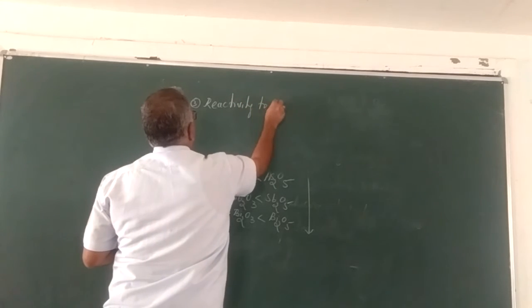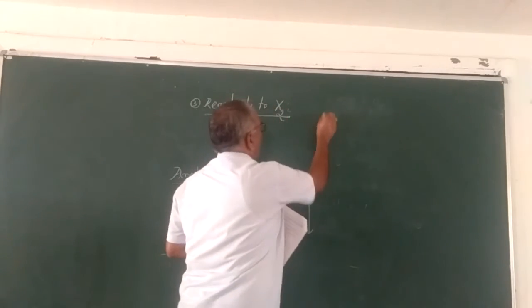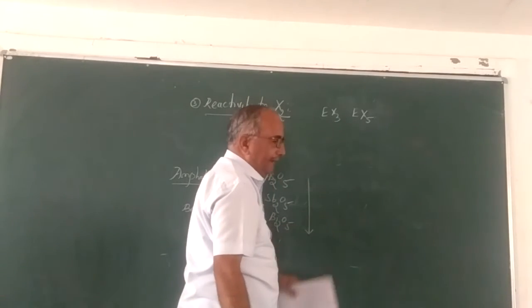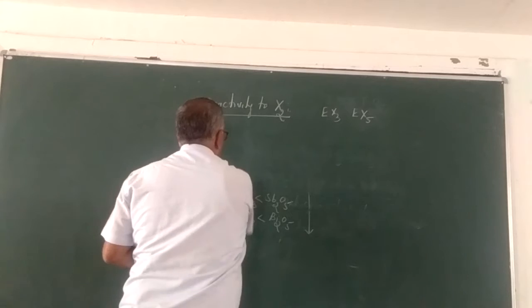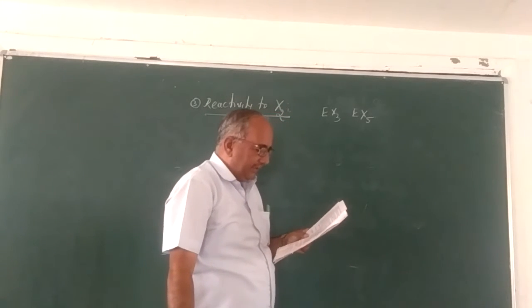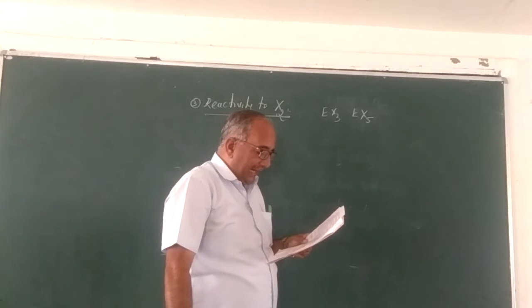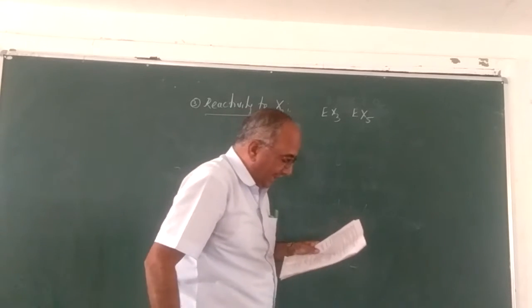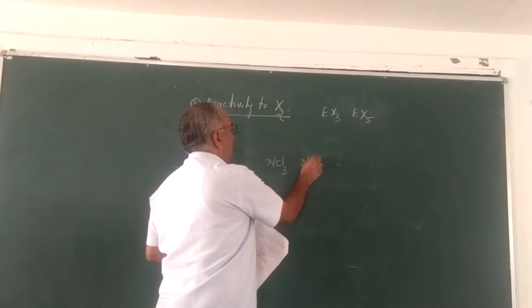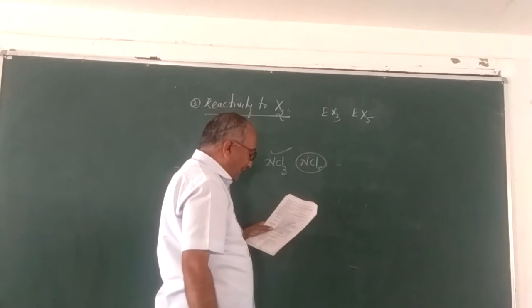The third property is reactivity towards halogens. All the 15 group elements form two types of halides — trihalide and pentahalide. Nitrogen does not form a pentahalide due to the non-availability of d-orbitals in the second shell. Therefore, only nitrogen trichloride is formed, and nitrogen pentachloride is not formed, due to the absence of d-orbitals in nitrogen.